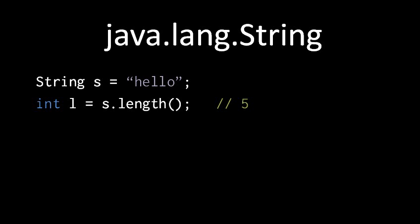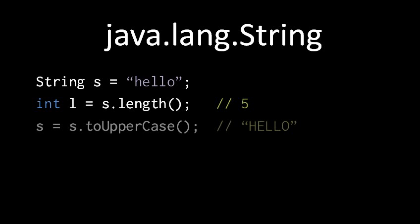The remaining string methods do various manipulations that you often want to do with strings. To give one example, the method toUpperCase will return a string which has all the same characters, except any lowercase character gets converted to uppercase. Be very clear that this method does not modify the existing string object — it produces a new one. In fact, none of the methods in String will ever modify a string object; they only produce new strings. So effectively in Java, strings are always immutable — they can't change.